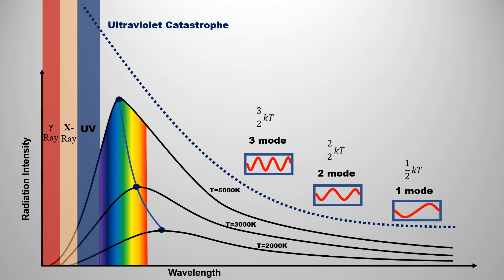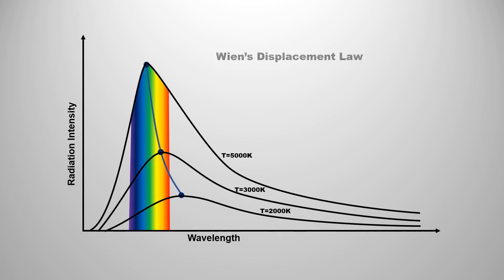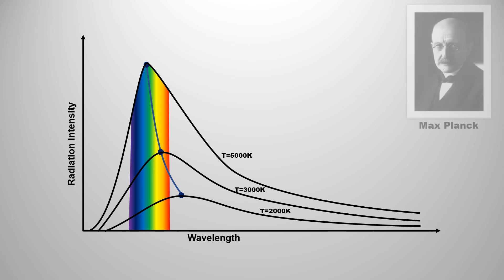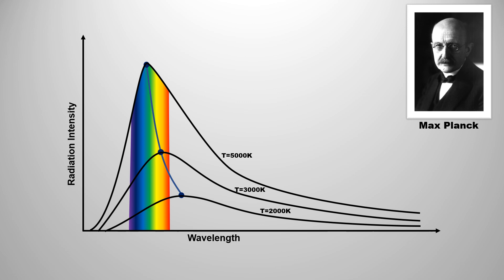Rayleigh-Jeans' law failed to explain this different behavior. After the failure of Wien's displacement law and Rayleigh-Jeans' radiation law — both based on classical mechanics — a different kind of physics was required to explain the blackbody radiation curve. This was done by Max Planck. Max Planck introduced quantum mechanics to successfully explain the blackbody radiation curve. In the next video on quantum mechanics, we will learn about Planck's radiation law.